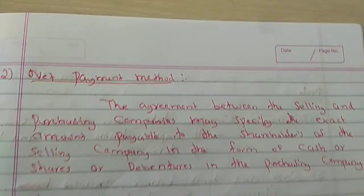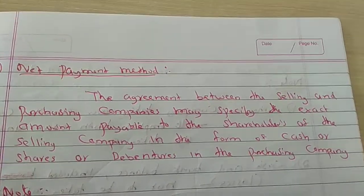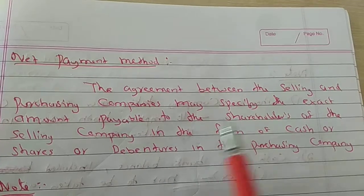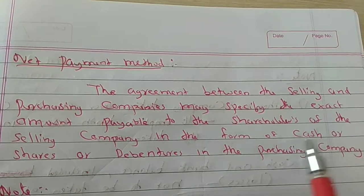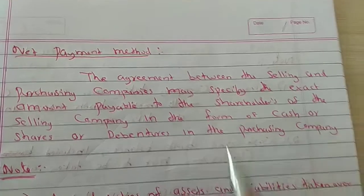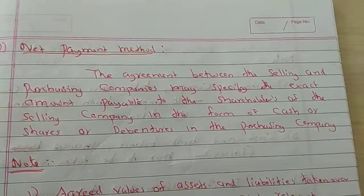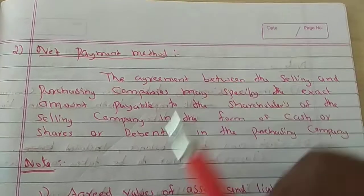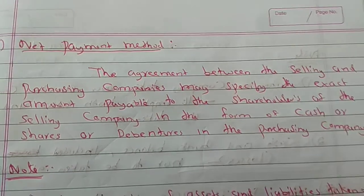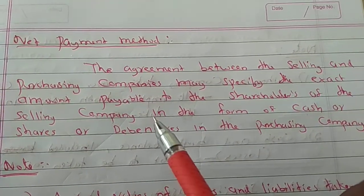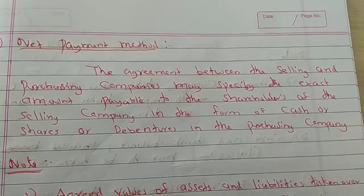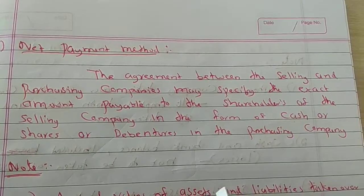Next is the Net Payment method. The Net Payment method is the agreement between the selling and purchasing company, which may specify the exact amount payable to the shareholders of the selling company in the form of cash, shares, or debentures in the purchasing company. Net Payment Method is not the Lumpsum Method — they follow different rules.